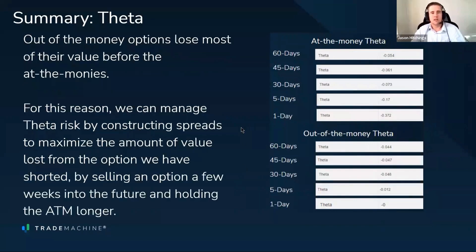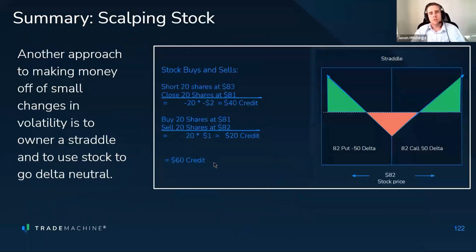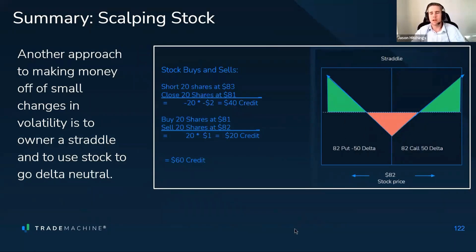If you want to construct a diagonal, you can do interesting things to manage the cost of owning options over time by mixing days to expiration. If you own the option that's further out and lower strike, you still have a relatively safe position where you can't lose more than you put in. When it comes to scalping stock — buying low and selling high — when you're hedging back to delta neutral with stock while long a straddle, as the stock moves up and down, you're making a little bit of money every time you hedge back. That's another way to make money off of volatility without needing stock to move a long ways in one direction.